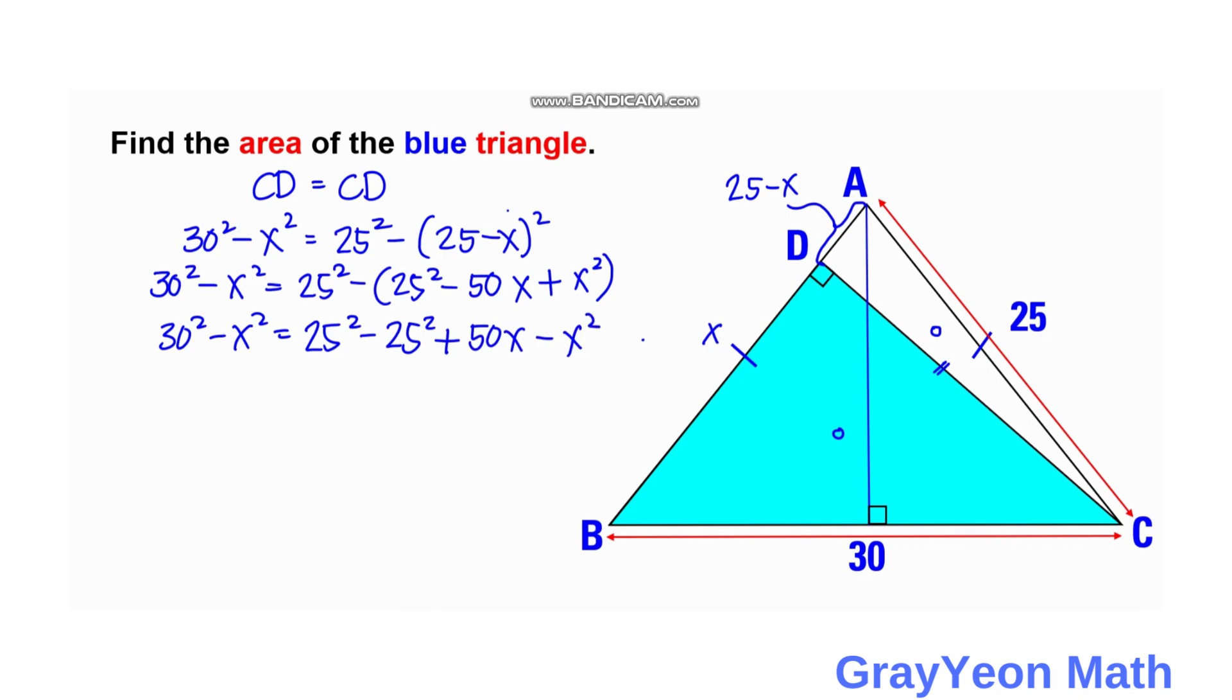We can cancel this X squared and cancel 25 squared. 30 squared is actually 900, so we have 900 equals 50X. If we divide both sides by 50, we cancel this zero, and this becomes 18. So X is equal to 18 units, or DB is equal to 18 units.